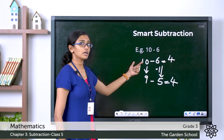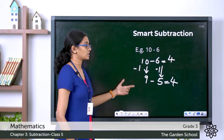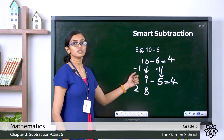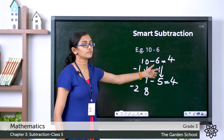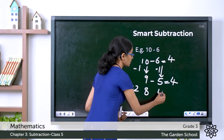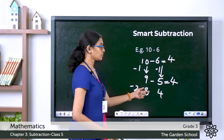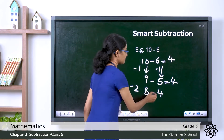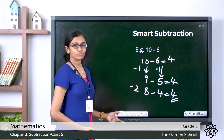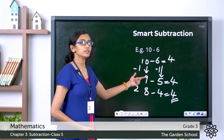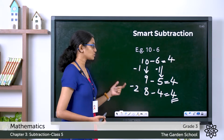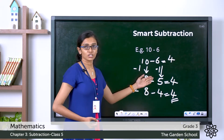Now instead of subtracting 1, I'm subtracting 2 from this 10, which gives you 8. Then subtracting the same number from the subtrahend: 6 minus 2 is 4. Now subtracting: 8 minus 4 is also 4. Did you notice? If we subtract the same number from both the minuend and the subtrahend, the difference remains the same. There is no change in the answer.